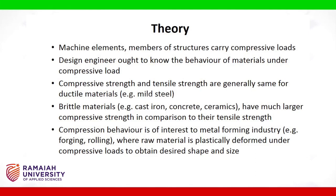Compressive strength and tensile strength are generally the same for ductile materials, e.g. mild steel. Brittle materials such as cast iron, concrete, and ceramics have much larger compressive strength in comparison to their tensile strength. Compression behaviour is of interest to the metal-forming industry for forging and rolling, where raw material is plastically deformed under compressive loads to obtain the desired shape and size.